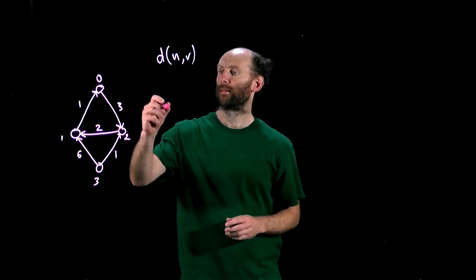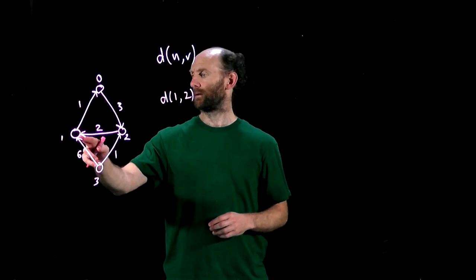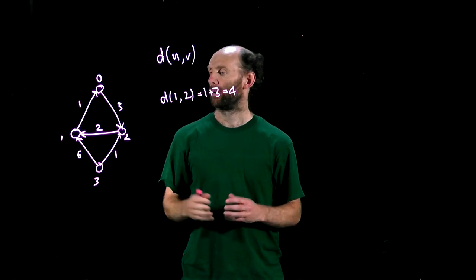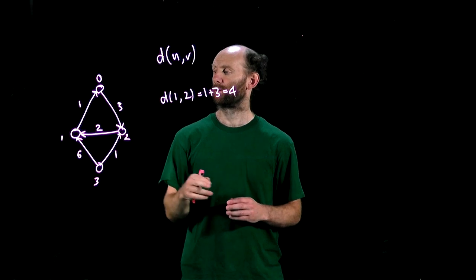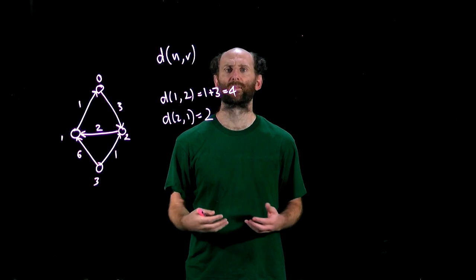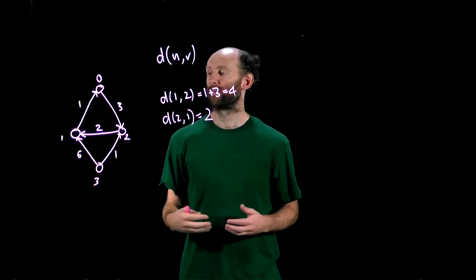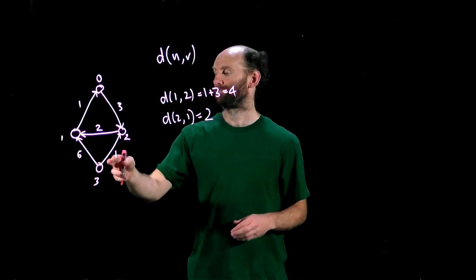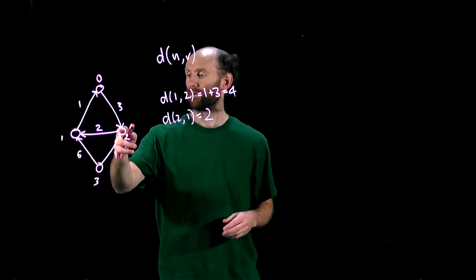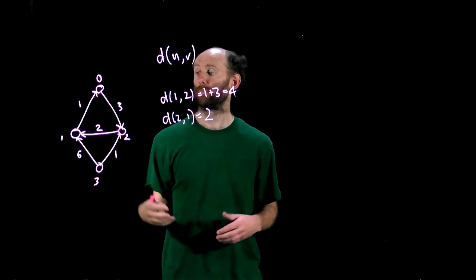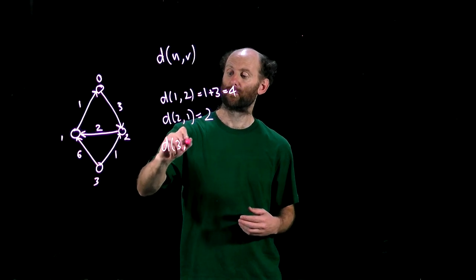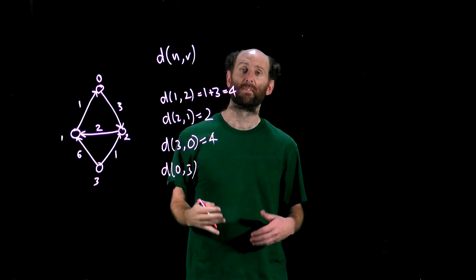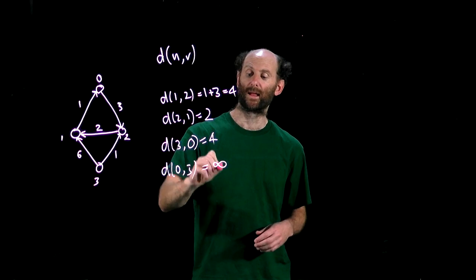So in this weighted digraph the distance from 1 to 2 is the cost of getting from 1 to 2 which is 1 plus 3 so the distance is 4 whereas the distance of getting from 2 back to 1 is just going across this arc with a cost 2. Notice that the distance between nodes is not always the shortest in terms of number of arcs it crosses. So in our example here the cost of getting from node 3 to node 0 via the shortest route is 6 plus 1 so that's 7 whereas going what looks like a more circuitous route through 2 then to 1 and then up to 0 costs 1 plus 2 plus 1 which is 4. So the distance from 3 to 0 is 4. Notice there's no way back from 0 to 3 so the distance from 0 to 3 is either undefined or often we'll just write it as positive infinity.